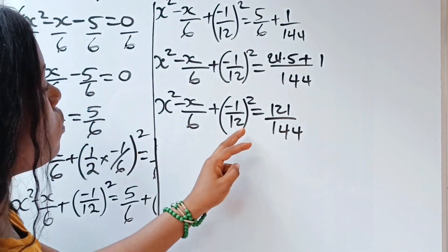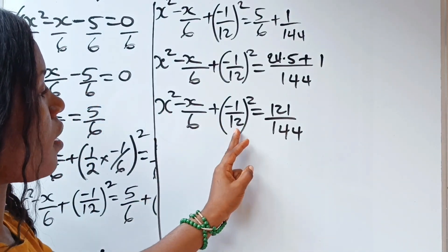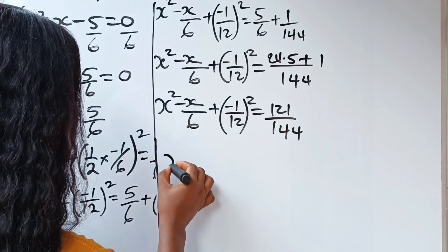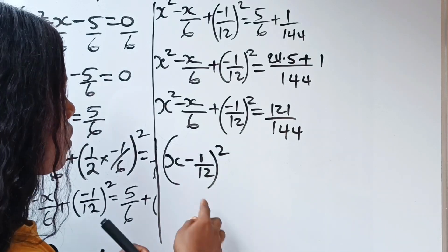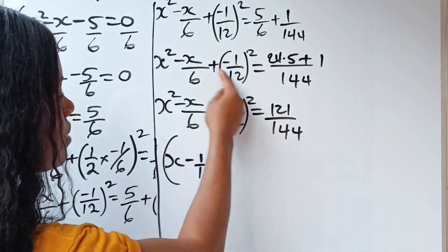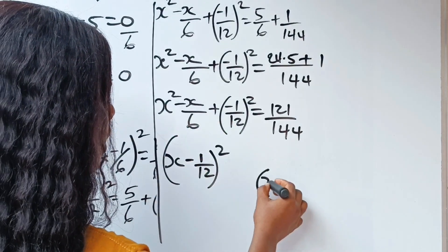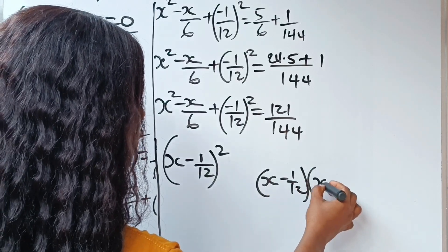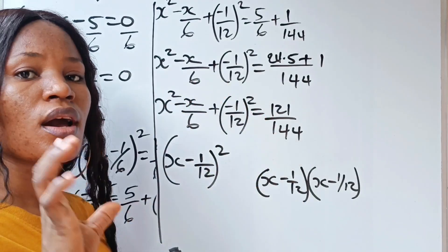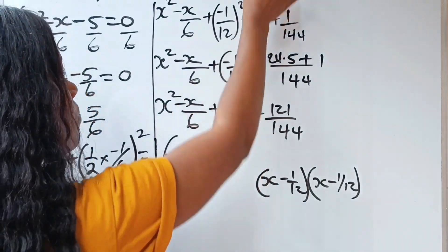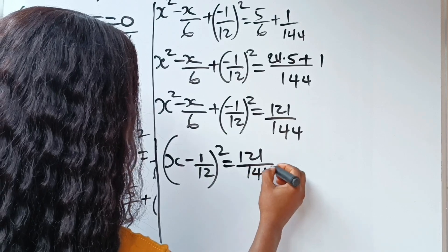This is why I asked you not to solve the left side further. When you get to this point, you just pick x and minus 1 over 12 and square them together. That is because if you multiply x minus 1 over 12 by itself, you get the whole left-hand side expression back. So factorizing is faster when you leave the terms in this form. So we have x minus 1 over 12 squared is equal to 121 over 144.